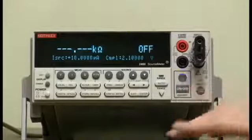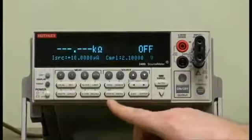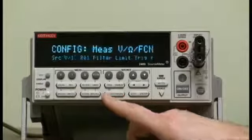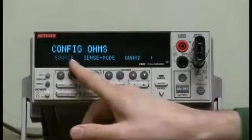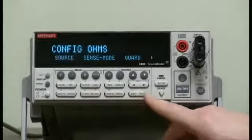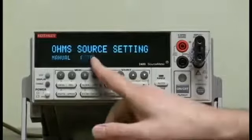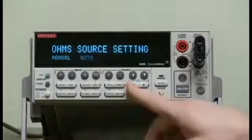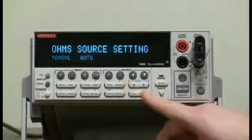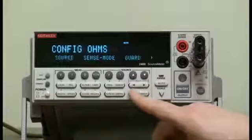If you were to change it, let me show you. You hit the config button, the ohms button, and you look for source. Once source is flashing, you could hit enter. See, we are in the auto mode. Auto makes it look like a DMM. If you were to select manual mode, hit enter, then exit.